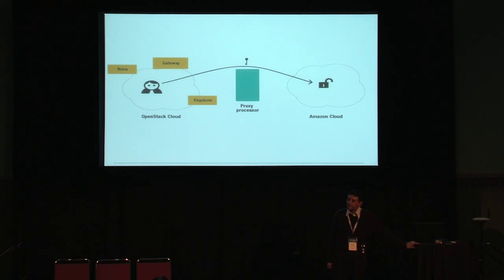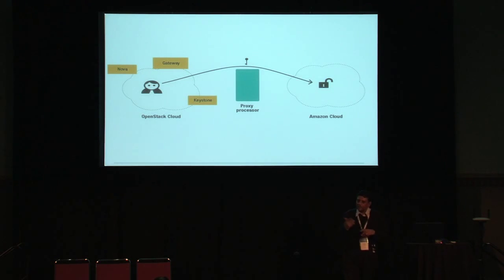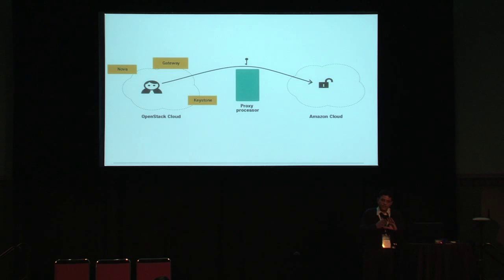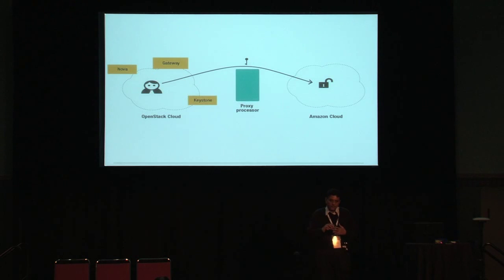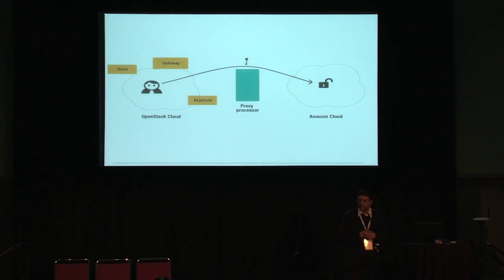If you have OpenStack Cloud to OpenStack Cloud, you don't need a proxy processor. In each cloud you'll have a gateway that talks — the gateway plays the role of the proxy processor. We also have another piece under development: a security infrastructure for accessing one OpenStack Cloud from another, including writing the software virtualization driver which will allow you to make the request from one OpenStack Cloud to another OpenStack Cloud.